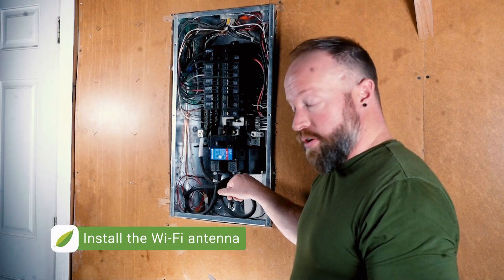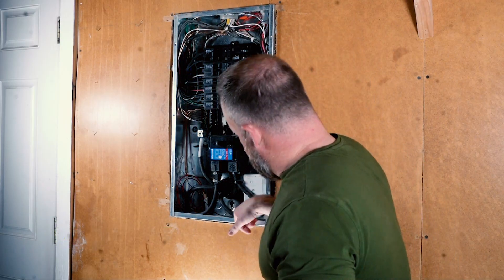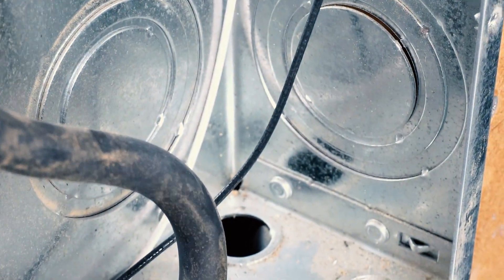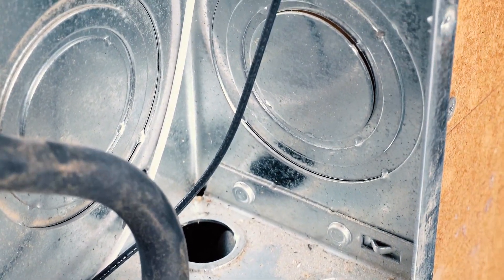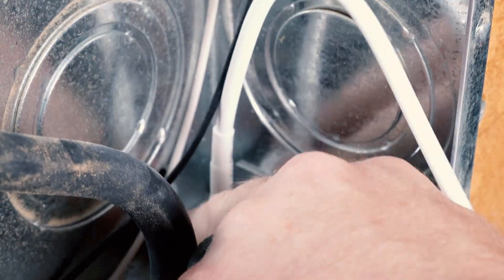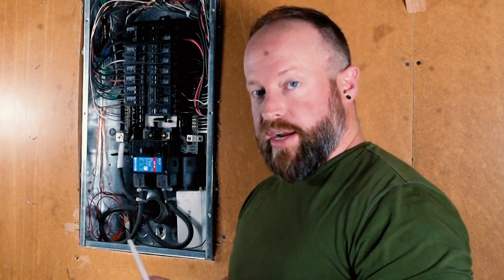The next step is to install the Wi-Fi antenna that's going to connect to the view. In this case, I'm going to knock out the rear knockout at the bottom of this panel and mount the antenna down inside the wall. The antenna does need to be mounted outside of the box for the proper signal integrity.